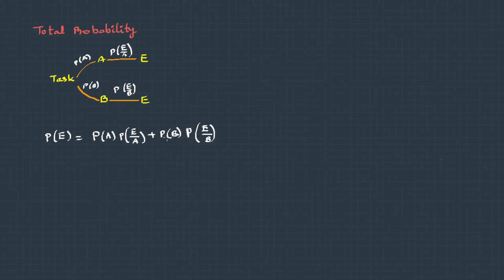...that becomes the total probability. Now, Bayes' theorem is basically an extension to total probability, and here we talk about happening of one event based on the previous event.